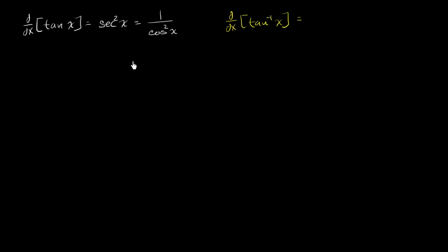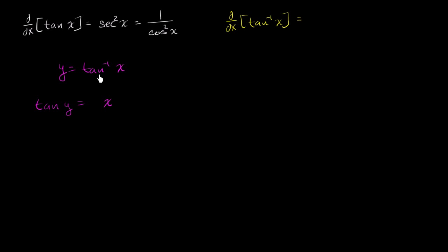Well, let's set y equal to the inverse tangent of x. That is the same thing as saying that the tangent of y is equal to x. All I've done is taken the tangent of both sides. And now we can take the derivative of both sides with respect to x.